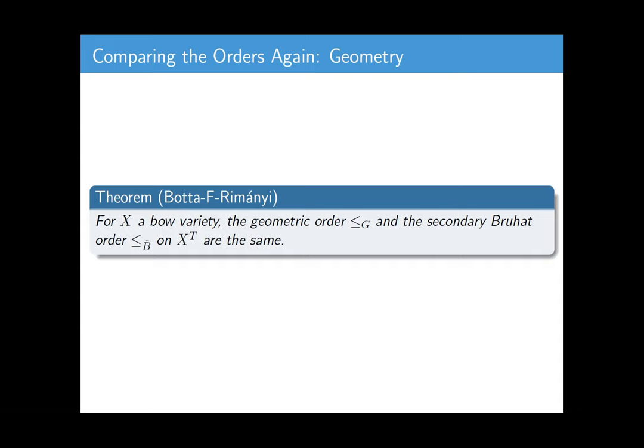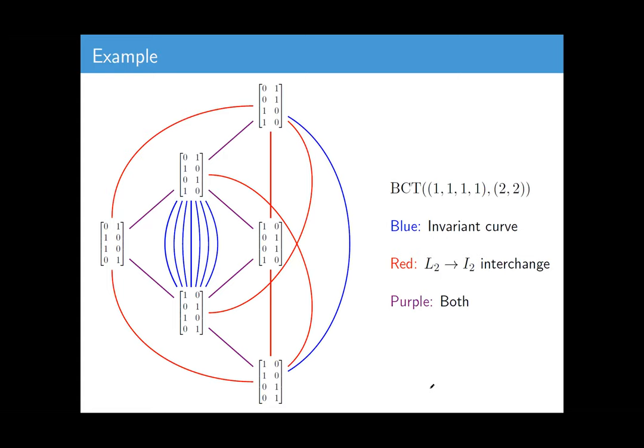And I don't have a whole lot of time left, but I'll tell you a little bit about this result. So one might suspect, oh, these L2 to I2 interchanges, are they just the same as invariant curves? Maybe these two objects are actually very naturally the same thing. It turns out not really. Here's an example. In this set of BCTs, the blue lines are invariant curves that are not interchanges, and the red lines are L2 to I2 interchanges that are not invariant curves. In purple are things that are both. So the blue things and the red things are really quite different. They just happen to generate the same partial order. That's sort of interesting. Why the heck do these things do that?